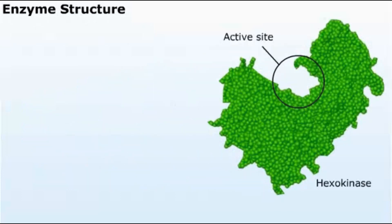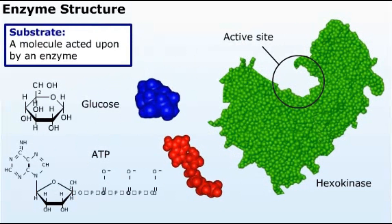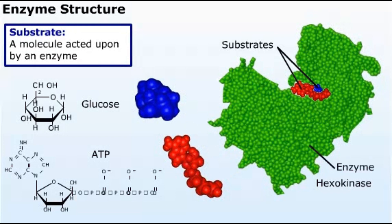Specific regions of the enzyme molecule bind other molecules called substrates. Substrates are the molecules that react. In this example, glucose and ATP are the enzyme's substrates and the enzyme is hexokinase.